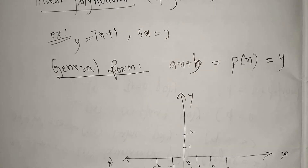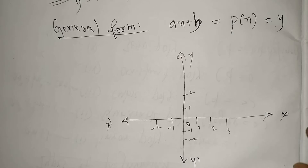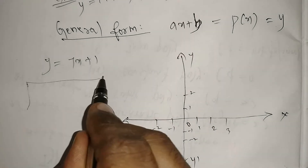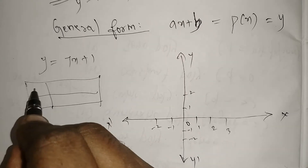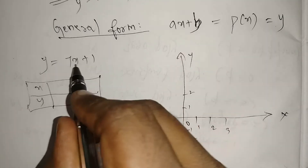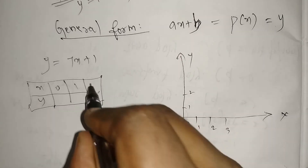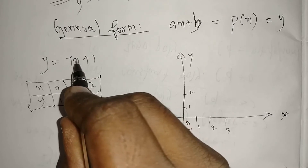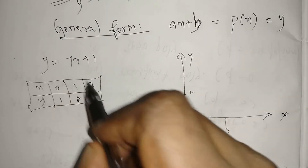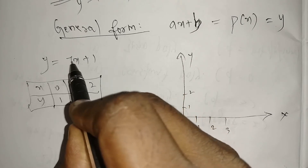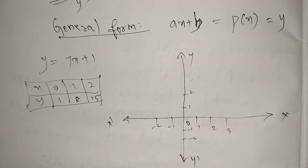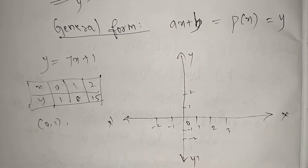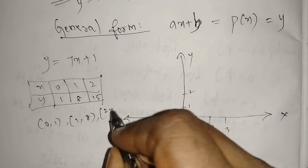Now I'm taking the example y = 7x + 1. For drawing a graph we need a table, so x can be any value and y equals 7x + 1. I'm giving x values 0, 1, 2. When x = 0, y = 1. When x = 1, seven plus one gives 8. When x = 2, fourteen plus one gives 15.